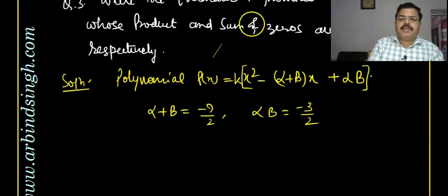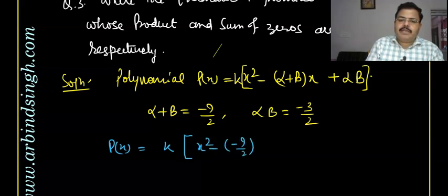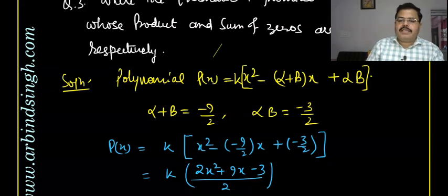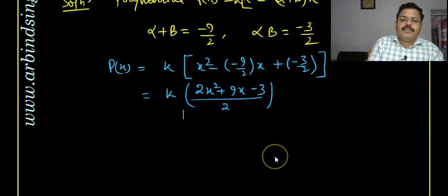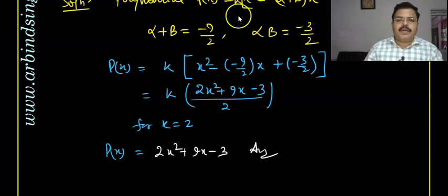Putting all these values: p(x) = k times of (x² - (-9/2)x + (-3/2)), which gives k times of (2x² + 9x - 3) divided by 2. For k = 2, the 2s cancel, and the polynomial becomes p(x) = 2x² + 9x - 3. So you can write it accordingly; there is no problem there.